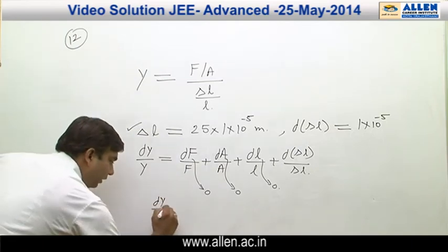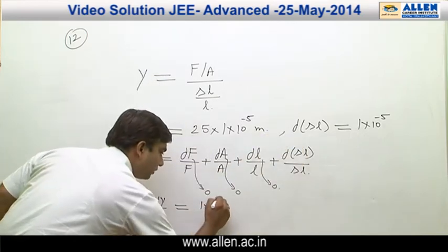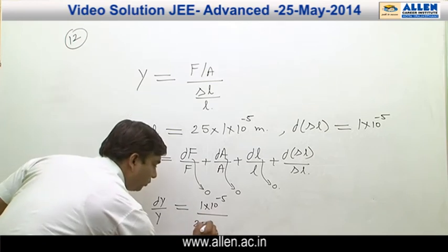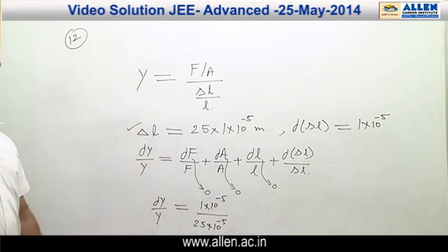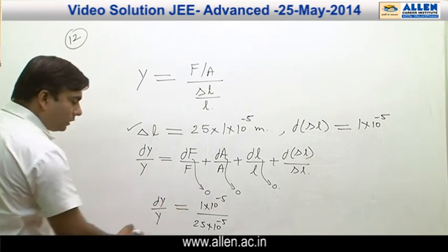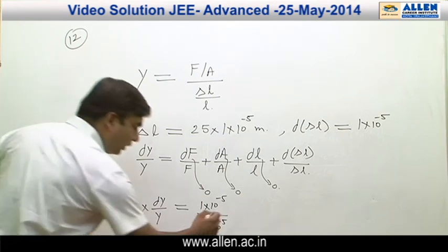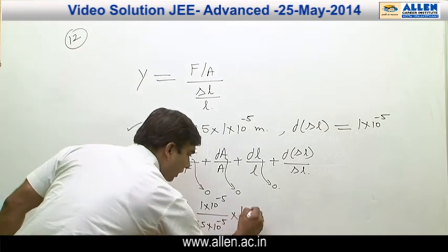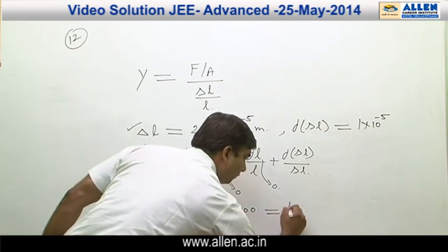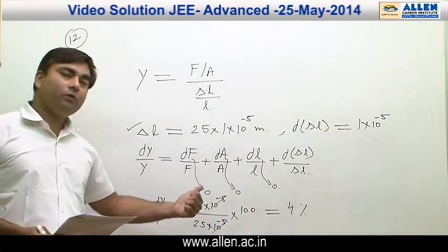Substituting the values, dy by y equals d(delta L) which is 1 times 10 to the power minus 5, divided by delta L which is 25 times 10 to the power minus 5. To calculate the percentage error, multiply both sides by 100, giving 100 times dy by y equals 1 divided by 25 times 100, which equals 4. Hence the percentage error in the calculation of Young's modulus for this case comes out to be 4 percent.